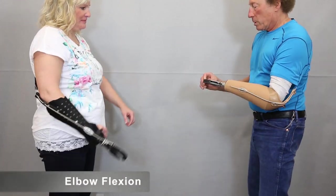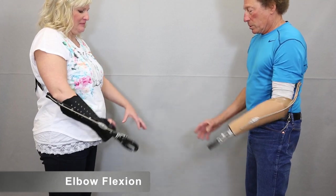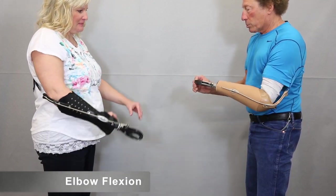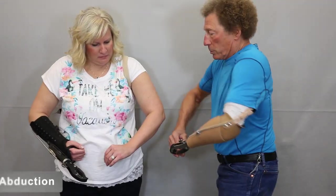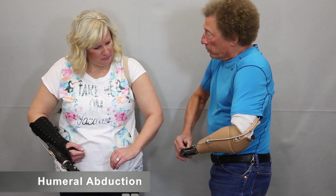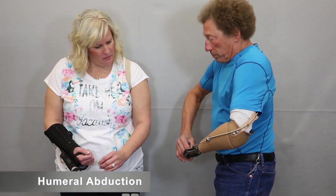Elbow flexion. Flexion of the forearm creates excursion and increases cable tension. Humeral abduction. Raising arms laterally with elbows flexed creates excursion and increases cable tension.